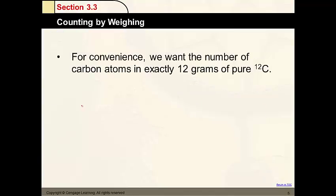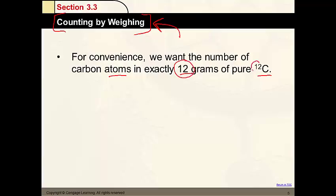Next we're going to talk about what would make this more convenient for us. Rather than looking at masses all the time, could a mass represent a number of particles? For example, if I know that an apple is always 0.2 kilograms, then I could just weigh a bunch of apples and know how many apples were in it — it's the idea of counting by weighing. So we want to know the number of carbon atoms in exactly 12 grams of carbon-12 — no coincidence, 12 and 12.